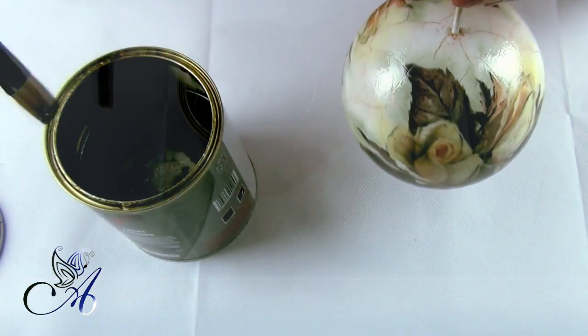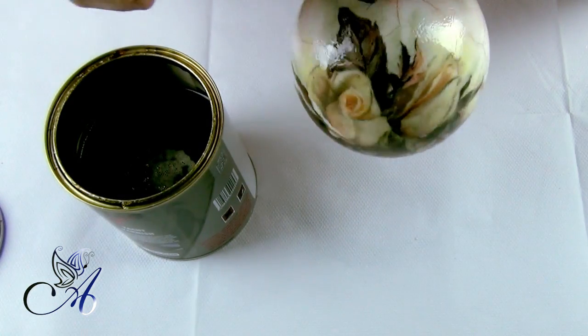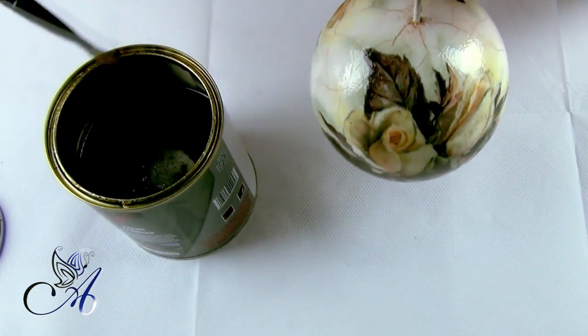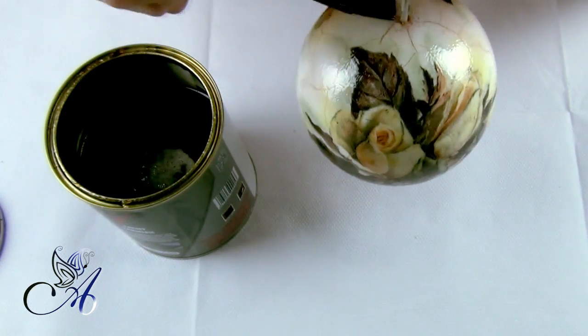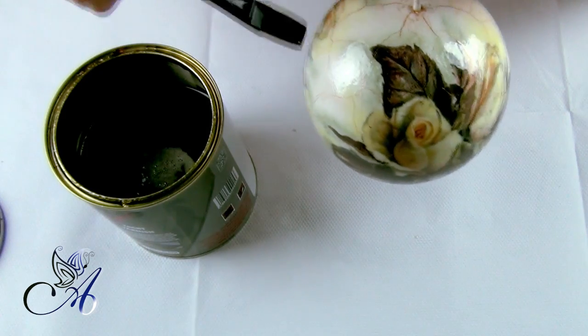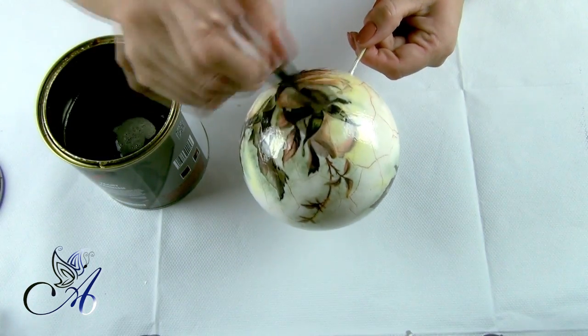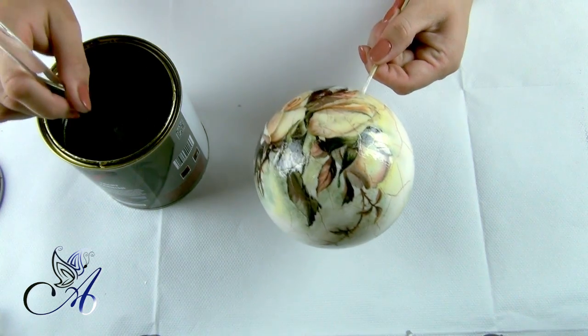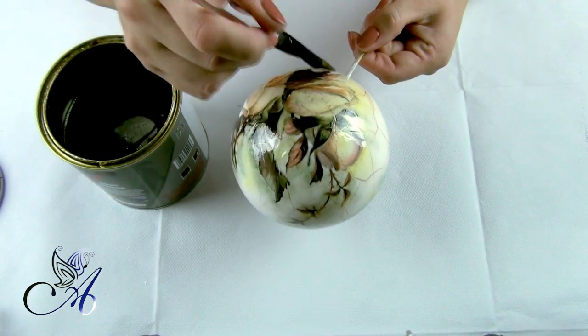To protect pigment from falling out of cracks we need to varnish our bauble with solvent-based varnish, not the acrylic one. And why? Simply because water-based varnish will wash out our dry pigment out of cracks.